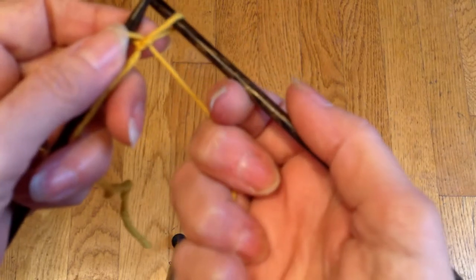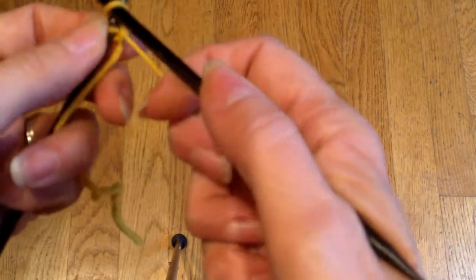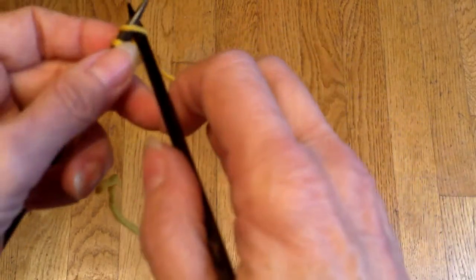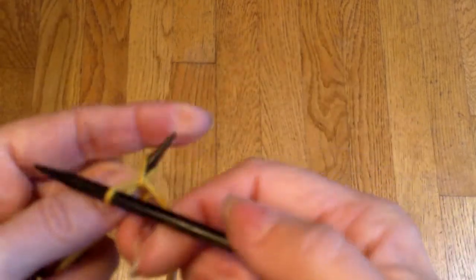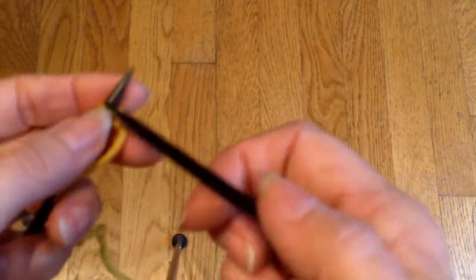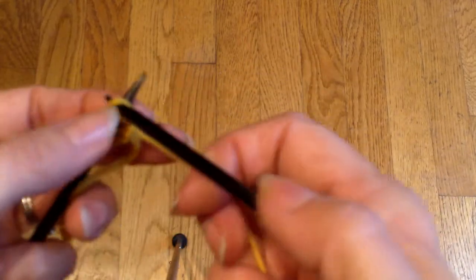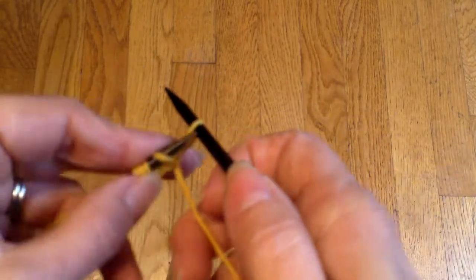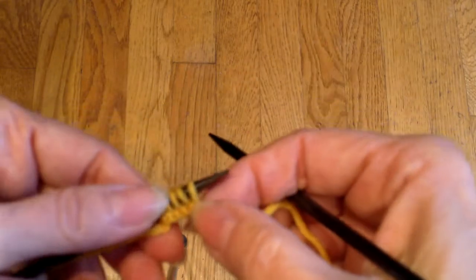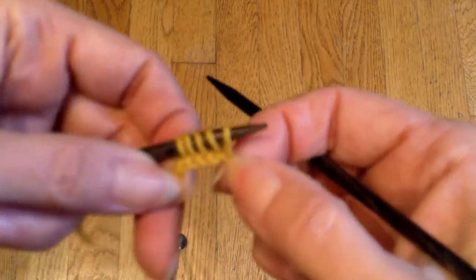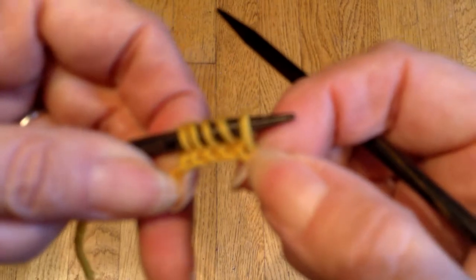Instead of keeping my loop on my right needle as I would if I were knitting, I transfer it back to my left needle. I insert and I knit, insert, insert, and it produces a cast-on edge that looks like this.